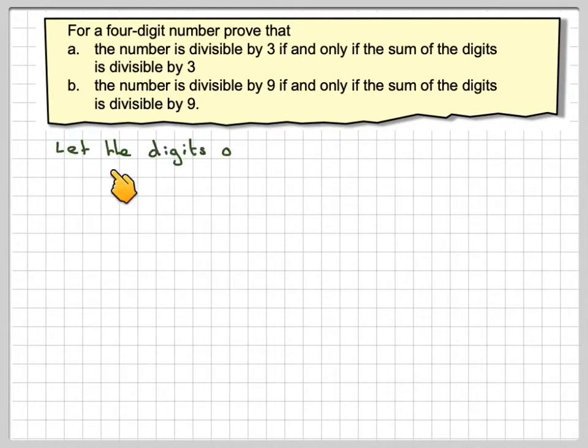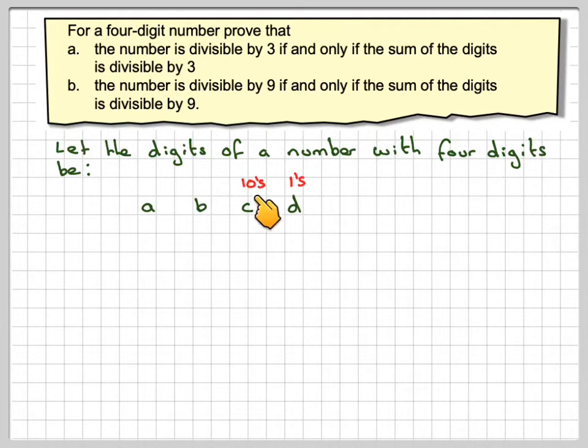So if we let the digits of the number with four digits be A, B, C, D, like 5,678 for example, then D stands for the units, C stands for the tens, B stands for the hundreds, and A stands for the thousands. This idea can be expanded to greater values, but we'll just look at it for four digits.